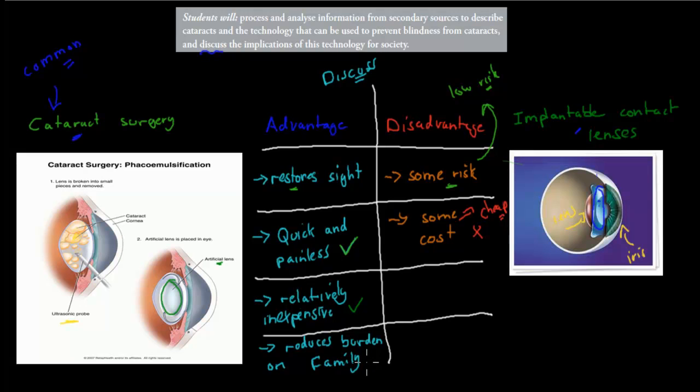And one more advantage, a big one, is reduce the burden on family and friends. If you're blind, people need to take care of you more. So if you get that surgery, there will be less burden on the family. The family can do other things with their time, apart from taking care of someone who's blind.